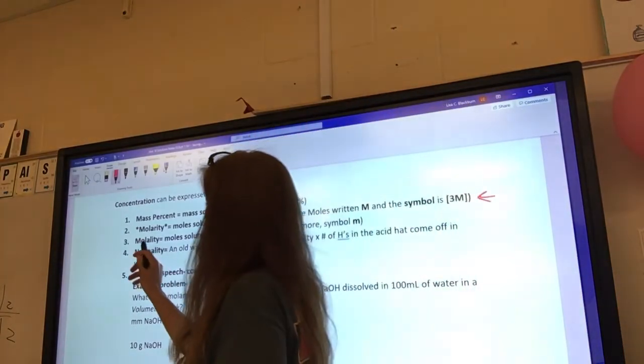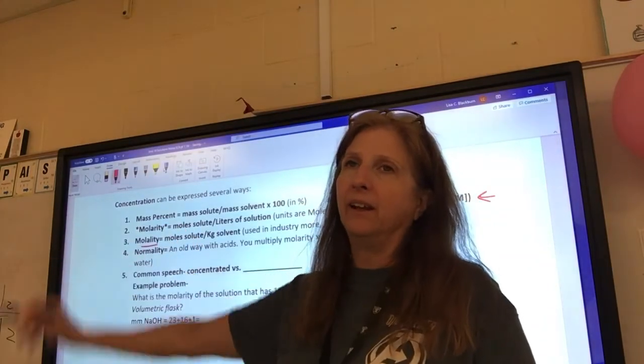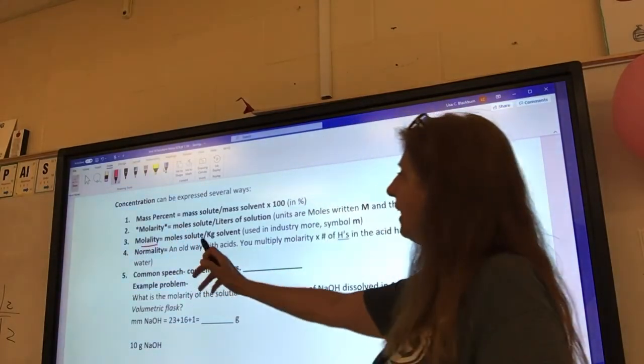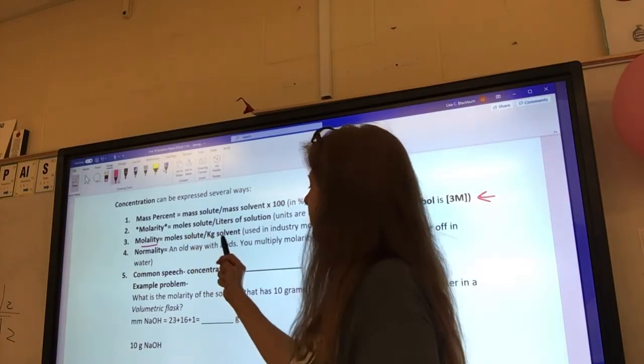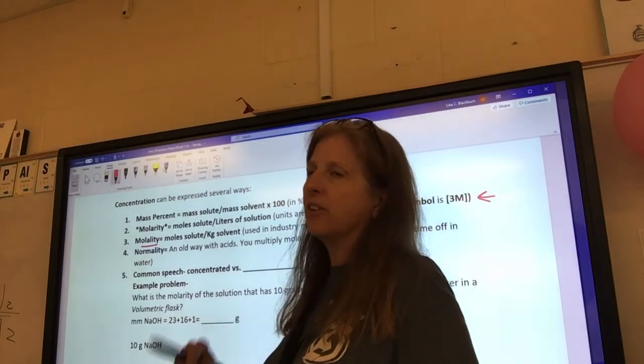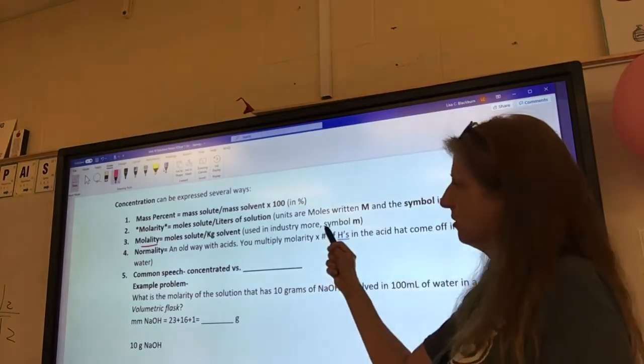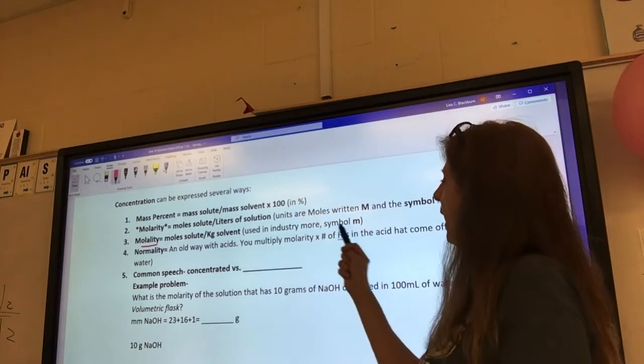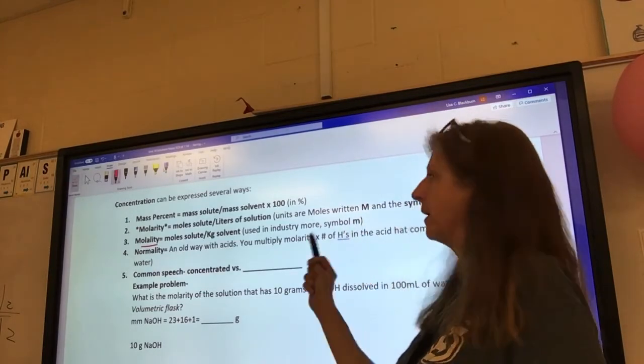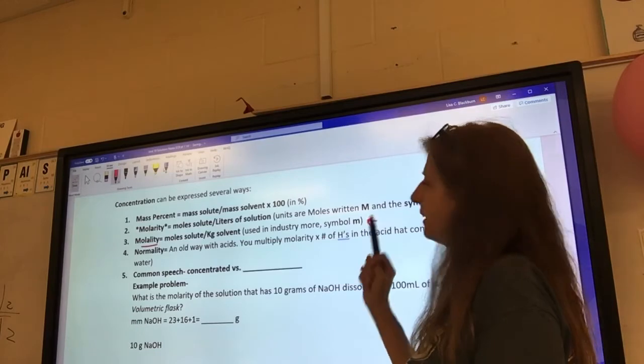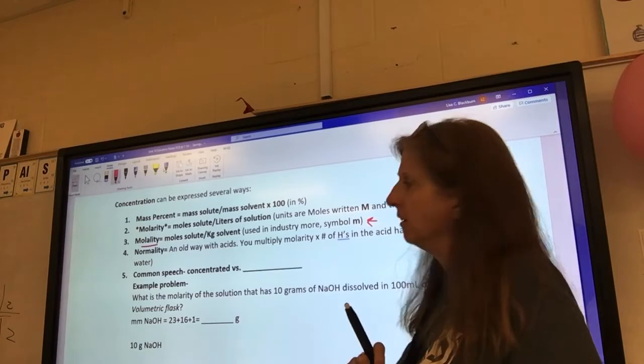The next one is called molality. And, how close is that? Molarity and molality. They're different. And, molality, instead of being as moles of solute, same as molarity. But, this time we're dividing by kilograms of solvent. So, this one is one that uses a little bit of the weighting thing. And, it's used more in industry, just like mass percent. And, its symbol is little m. Once again, how alike can we make all of this stuff? So, it's confusing. But, molality is little m. Molarity is big m. Can we follow that?